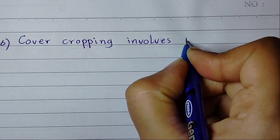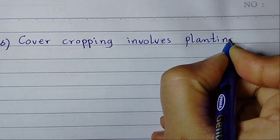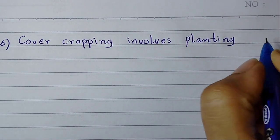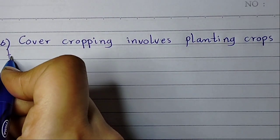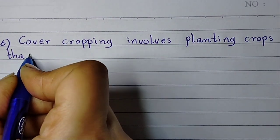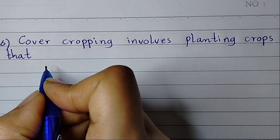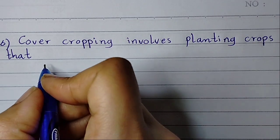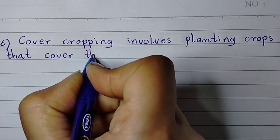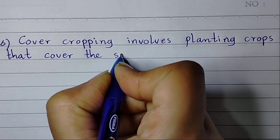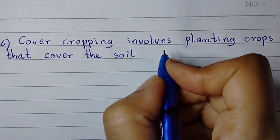Point number six: cover cropping involves planting crops that cover the soil and protect it from erosion.